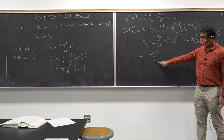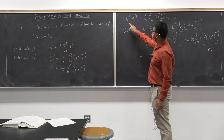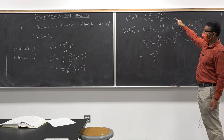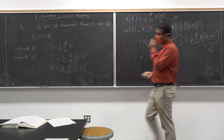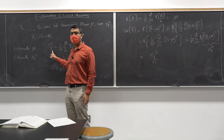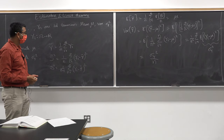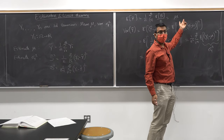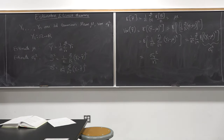As n grows large, the variance becomes very small, which means the value of ȳ approaches the true mean μ. This implies that this estimator for μ appears to be a good estimator — if I collect more data, ȳ will approach μ, which is what we wanted to estimate.